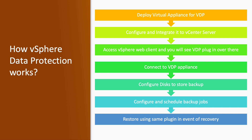To deploy vSphere Data Protection in your environment, you will need to download the virtual appliance from the VMware website. Once the download is complete, you deploy the virtual appliance in your vSphere environment on any ESXi host.